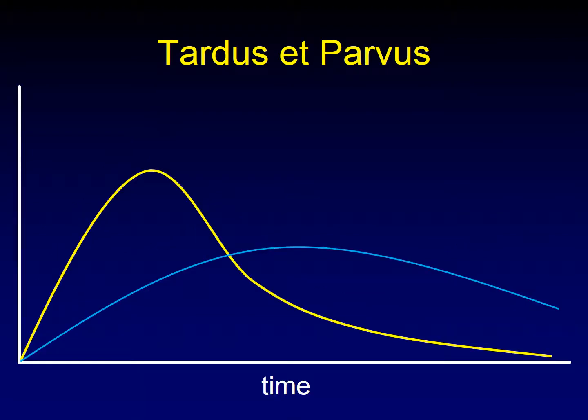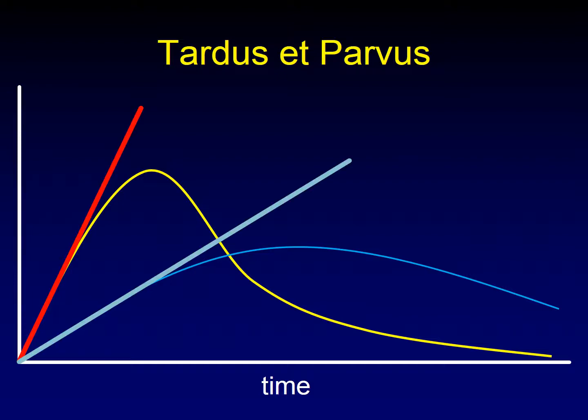Let's take the next example: cerebral blood flow. There's our maximum angle on the normal curve, and here's the maximum angle of the tardus-parvus waveform. You can see the angle is less, so we have decreased cerebral blood flow when we have obstruction.